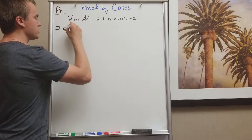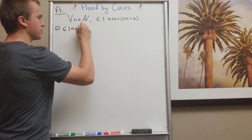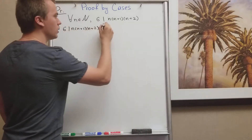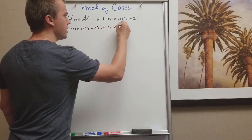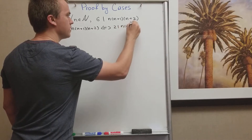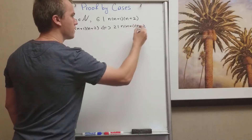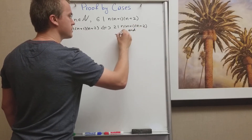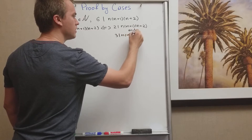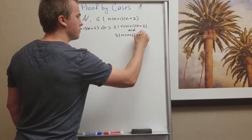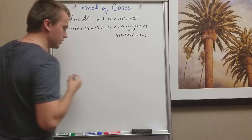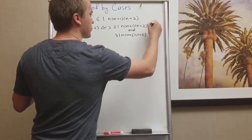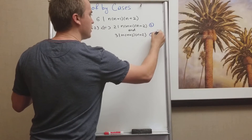We want to show that 6 always divides n times n plus 1 times n plus 2. It's helpful to show that 2 divides n times n plus 1 times n plus 2, and also that 3 divides n times n plus 1 times n plus 2. So in our proof we need to show Statement 1 and Statement 2.